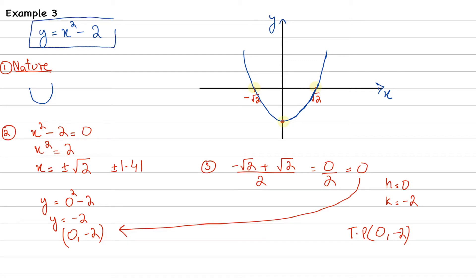Such that it doesn't have any x-coefficient. Okay, so you can remember one thing too. That if you don't have any x-coefficient, then your x-coordinate of the turning point will always be equal to 0. When the coefficient of x is 0.